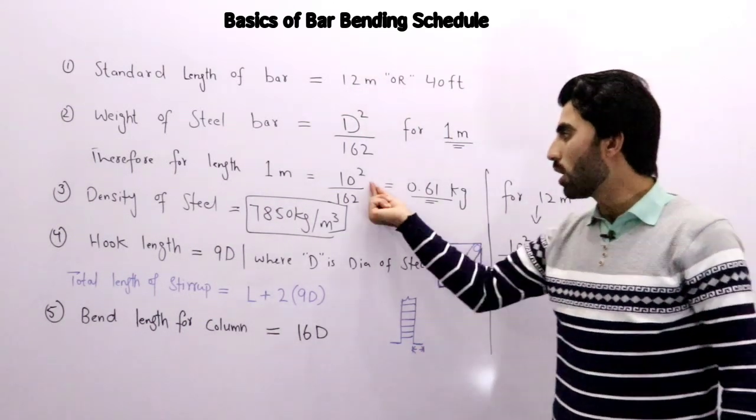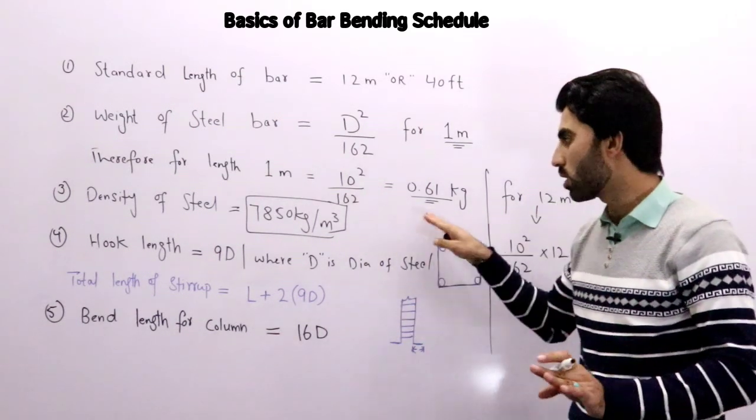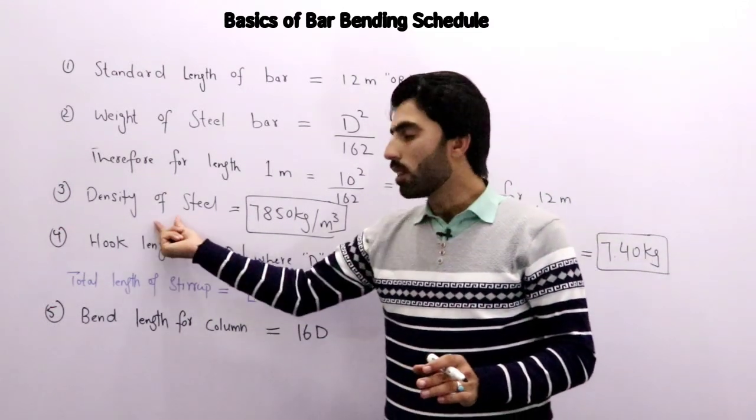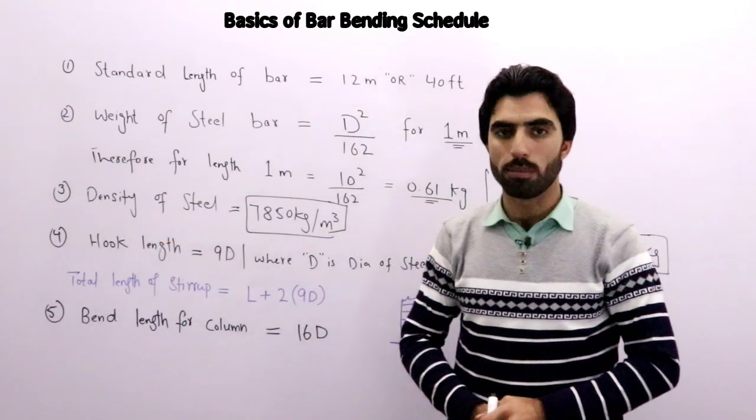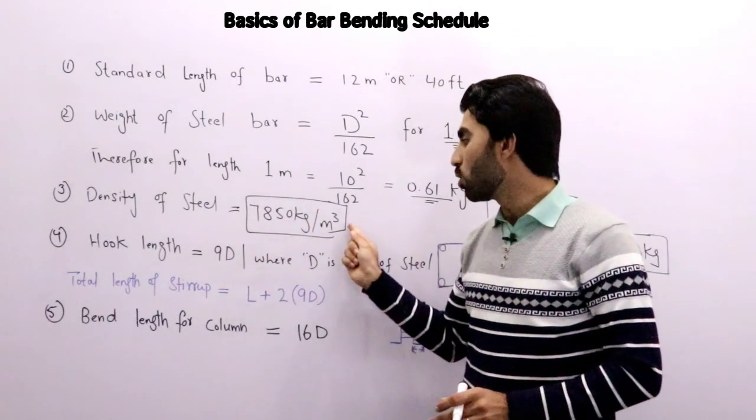This is one steel bar length which is 12 meter. If the diameter is 10 millimeter, you can use here 12 millimeter, 16 millimeter, 20 millimeter, 25 millimeter, etc. This is the formula. More students ask about the density of steel bar, so that's 7850 kg per meter cube.